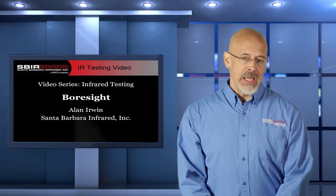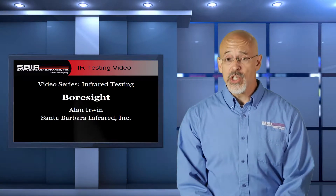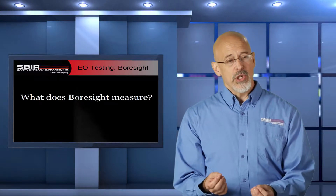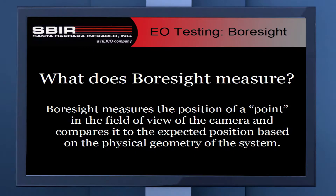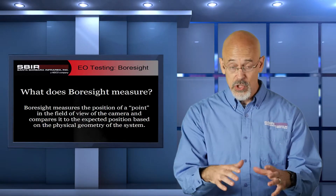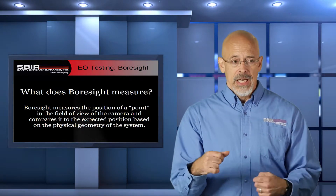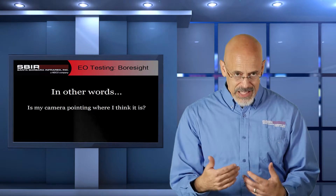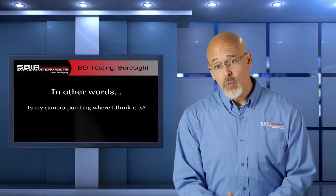They're basically the same procedurally, applied slightly differently, and that's why they have two different names. So what does boresight measure? Boresight measures the position of a point in the field of view of the camera, and compares that position to what the expected position would be based on the geometry of the camera and its position in the overall system. More simply: is my camera pointing where I think it is?